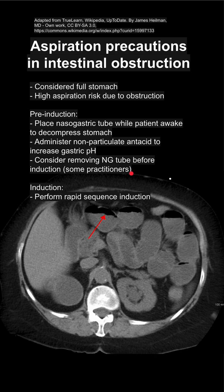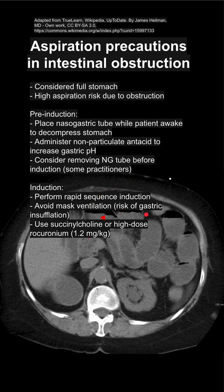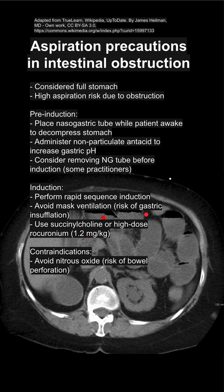For induction itself, you want to perform a rapid sequence induction. You want to avoid mask ventilation, which risks gastric insufflation, and you want to use succinylcholine or high-dose rocuronium.